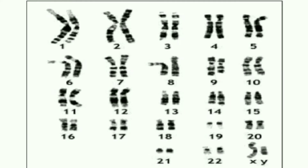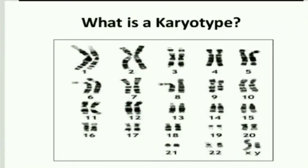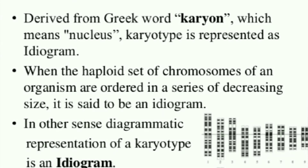Hello friends, welcome back to Biotech Simplified. Today we will discuss another interesting topic which is karyotype. A karyotype simply means a picture of a person's chromosomes — it is a collection of chromosomes. The word karyotype comes from the Greek word 'karyon,' meaning nucleus.